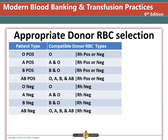This table shows compatible red blood cell types for each patient type. While RH positive patients can receive RH negative units, RH negative patients should not receive RH positive blood. We do not generally waste the RH negative units on RH positive patients unless that is our only option — we want to save the RH negative units for RH negative patients.